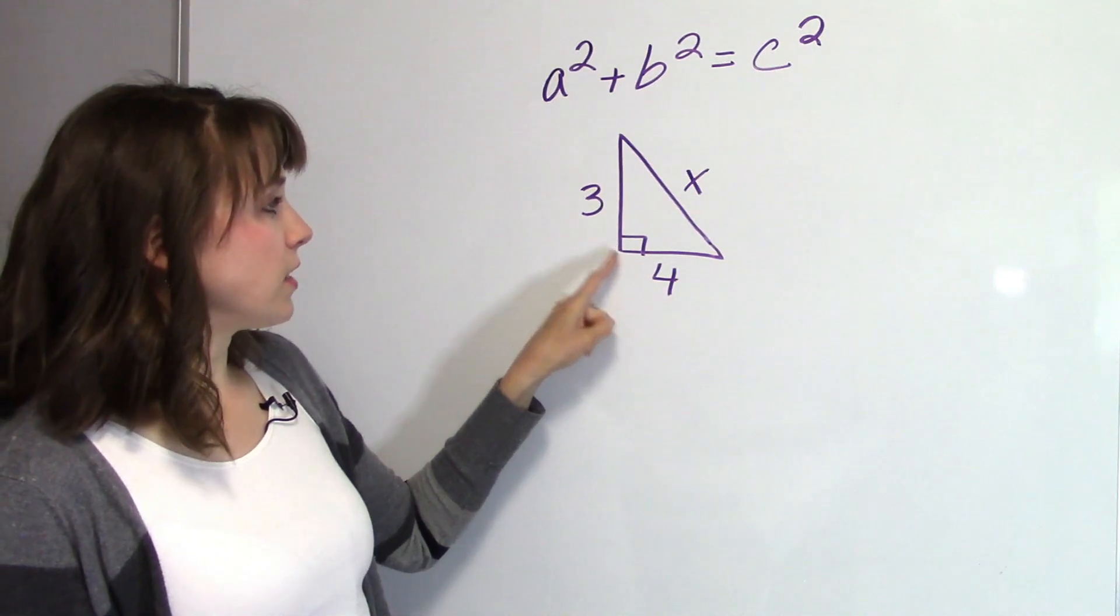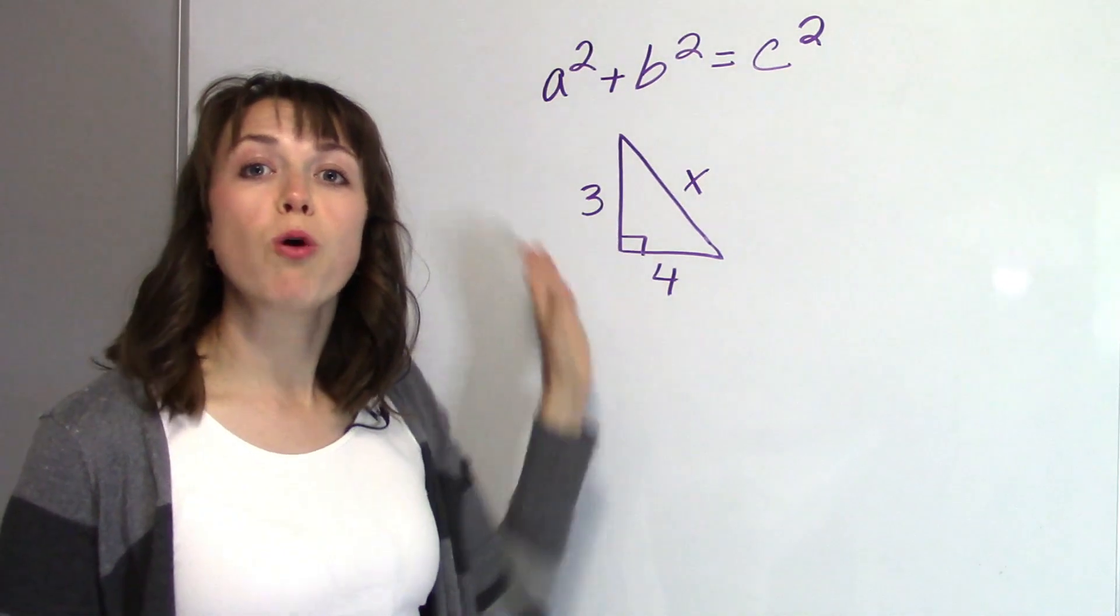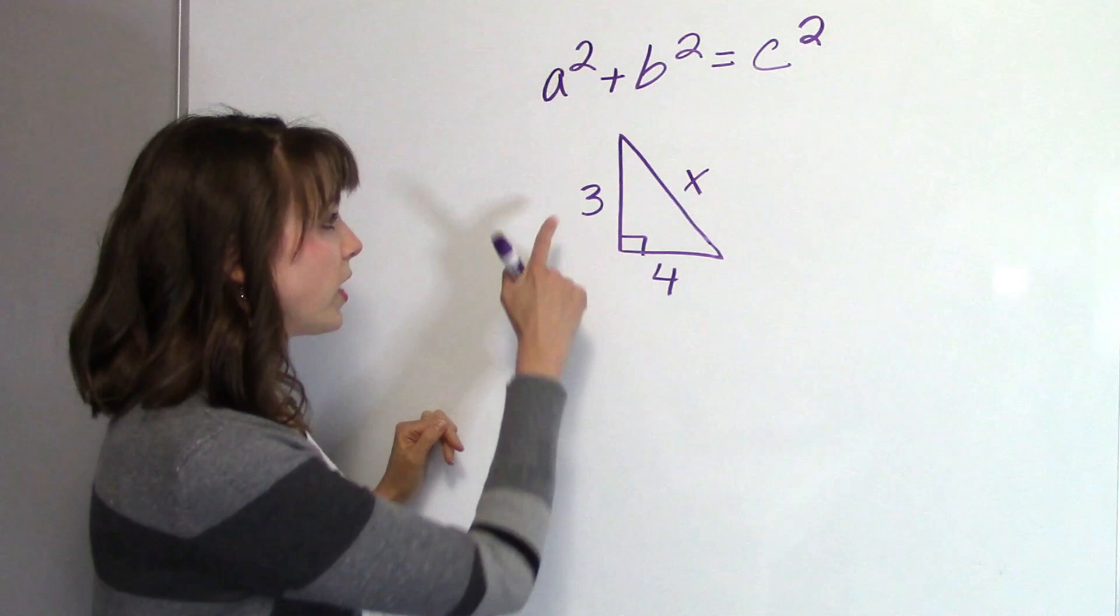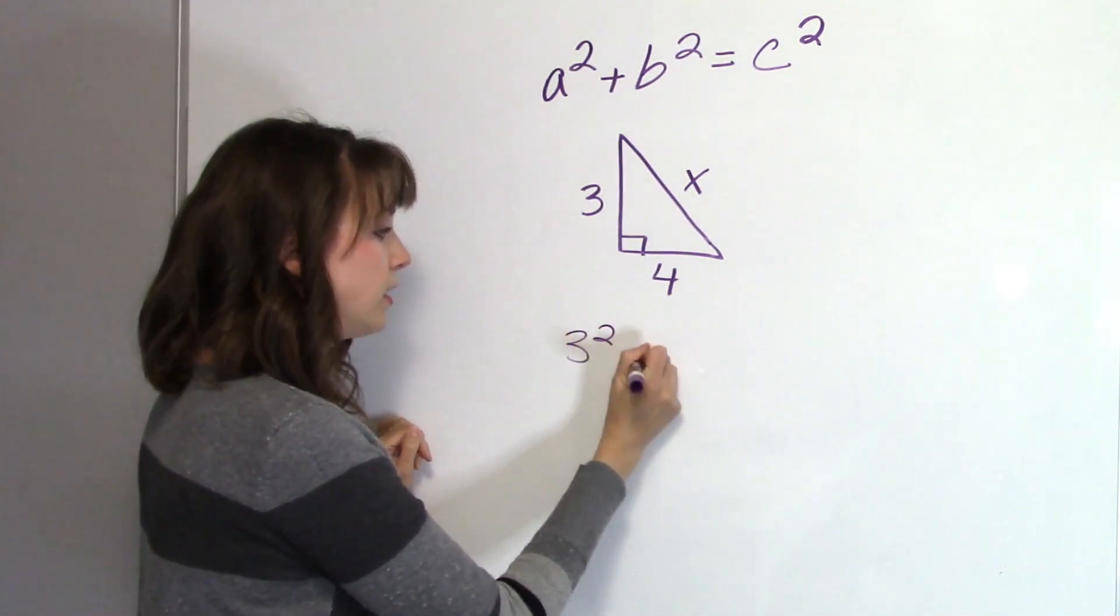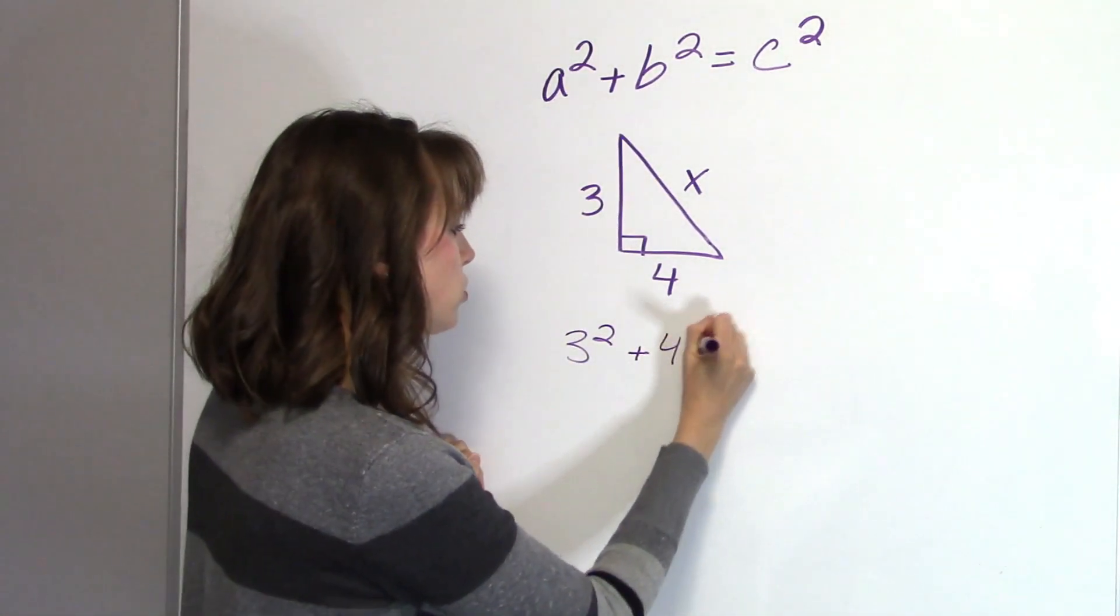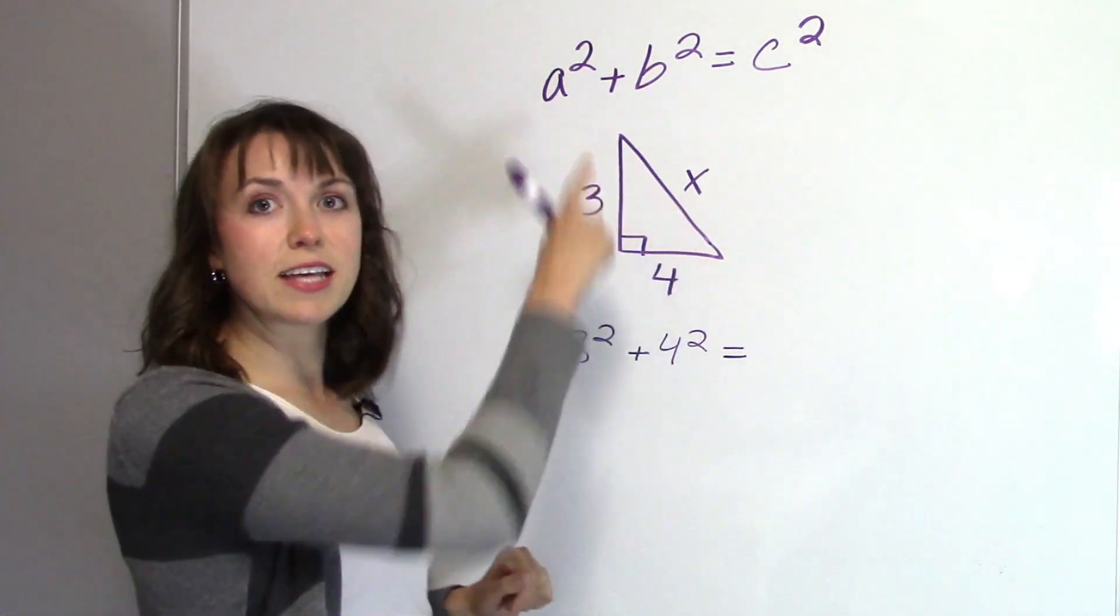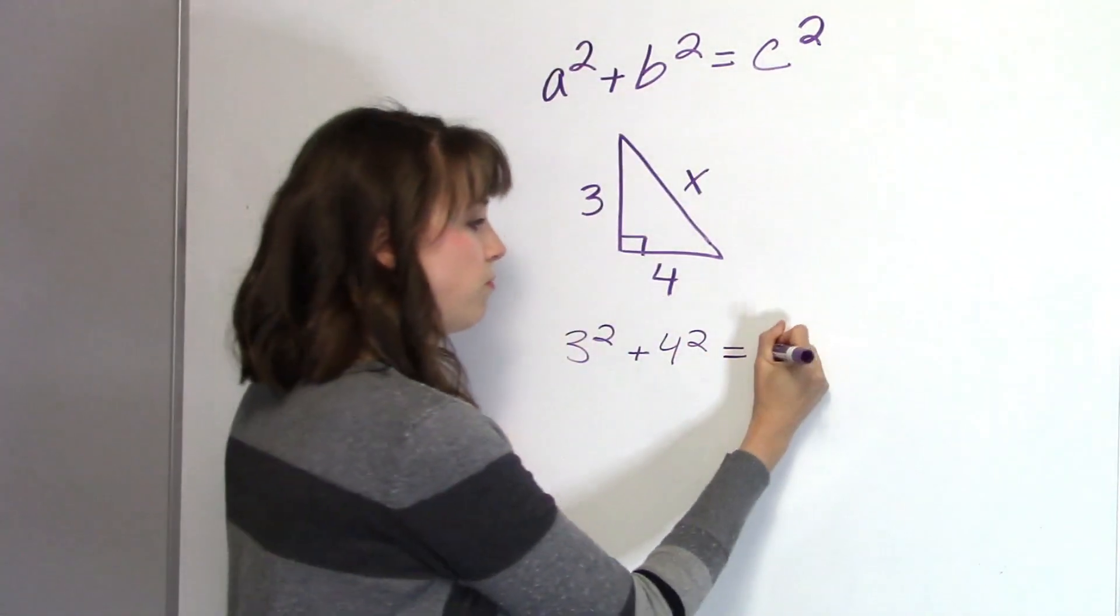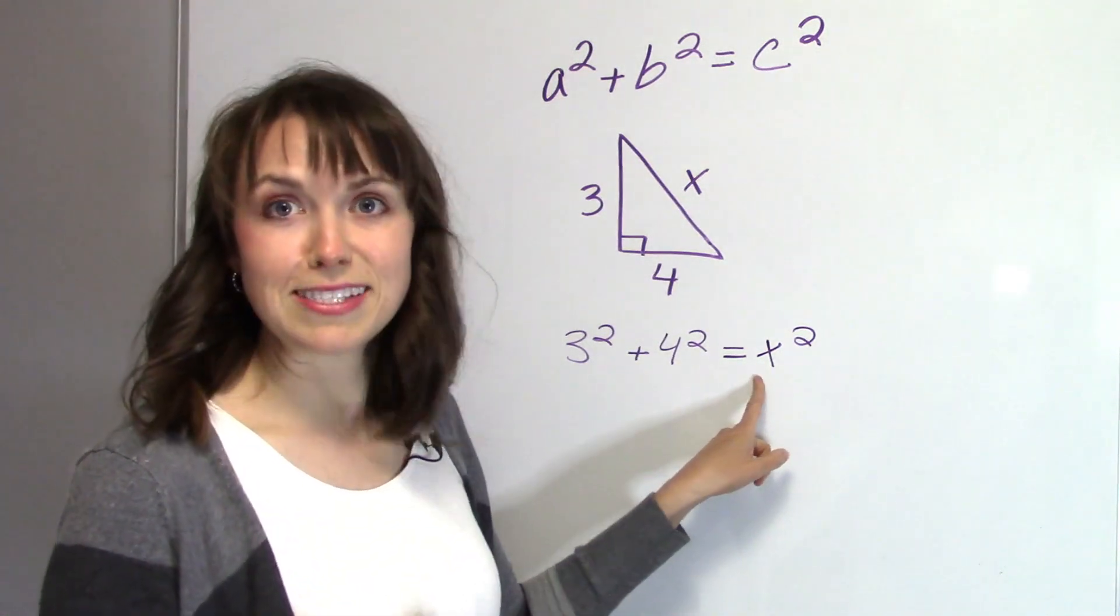So here I have my little angle here with my right angle, and I want to make sure that it's both sides of those represent the A and the B. So in this case we have, we'll call this one A, so we have three squared, and B, which we'll call four, four squared equals C, which C is the hypotenuse or it's the one that's right across from the right angle, and that one is X.